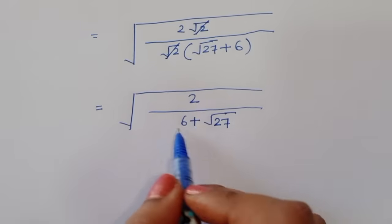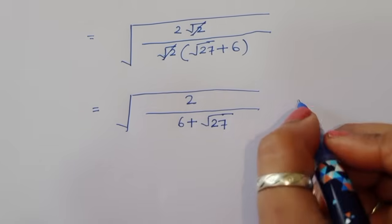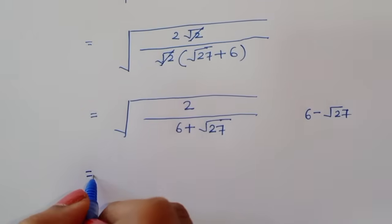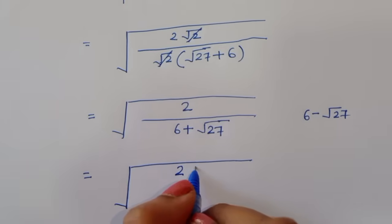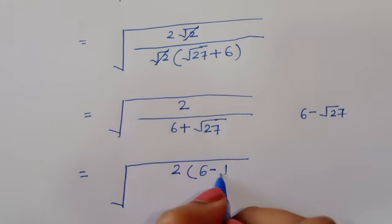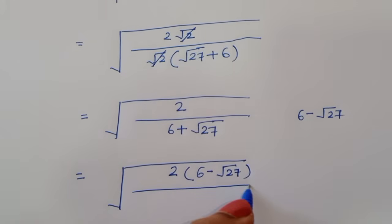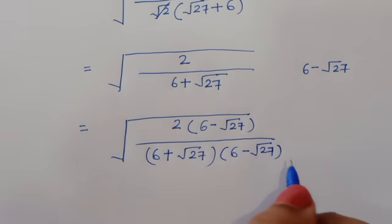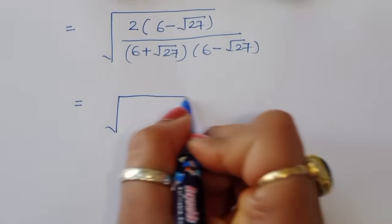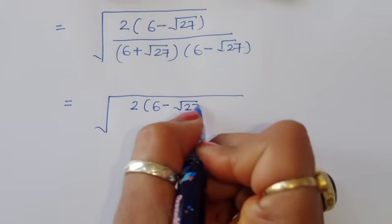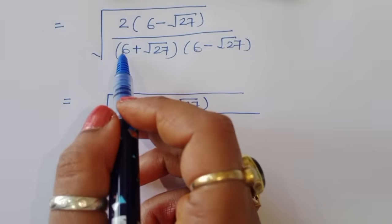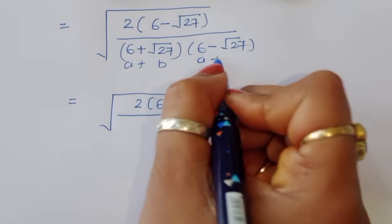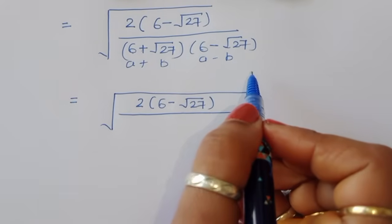Now we rationalize by multiplying with the conjugate pair of (6 plus square root of 27), which is (6 minus square root of 27). So we multiply numerator and denominator by (6 minus square root of 27), giving us 2 times (6 minus square root of 27) divided by (6 plus square root of 27)(6 minus square root of 27).